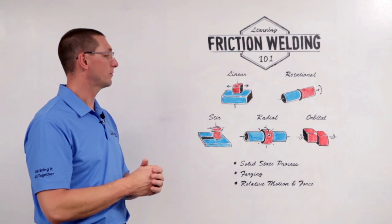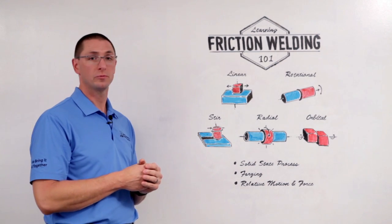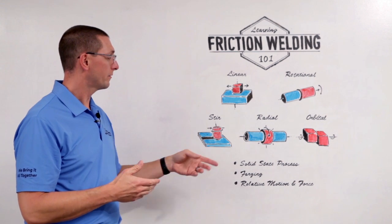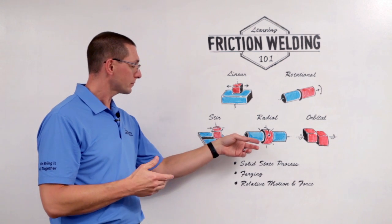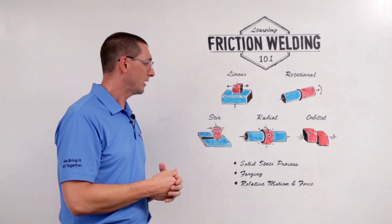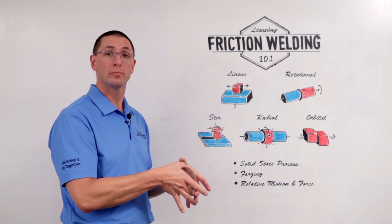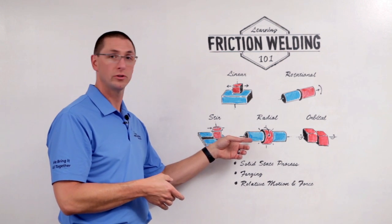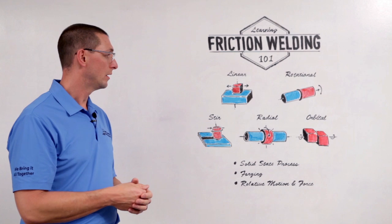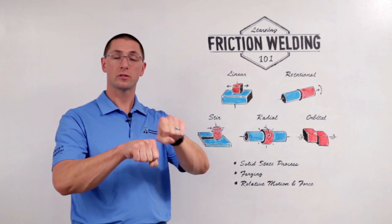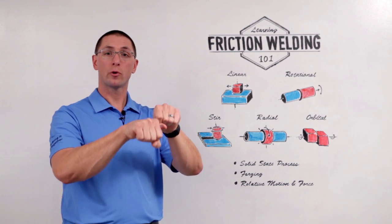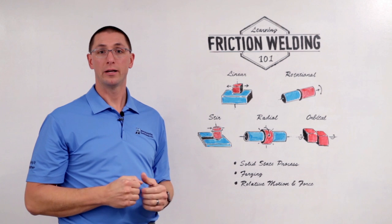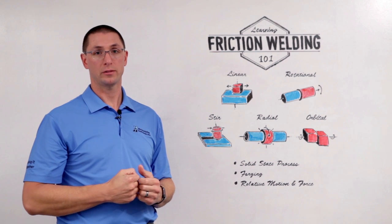There are two other types of friction welding that are a little less common. With radial friction welding, I have a collar that I'm rotating and compressing onto the OD of a tube or a bar. And with orbital friction welding, I'm orbiting the two parts around their center axis in order to create that relative motion.